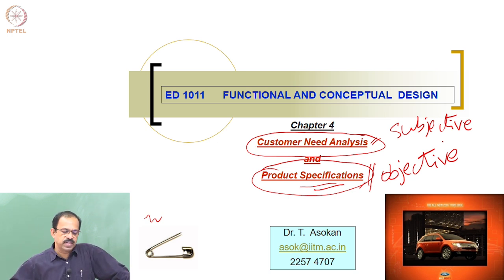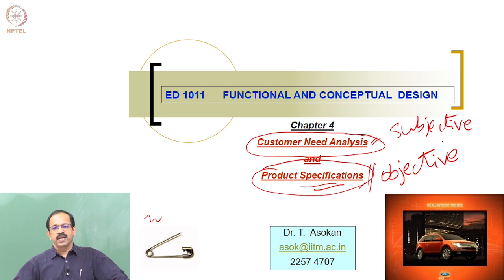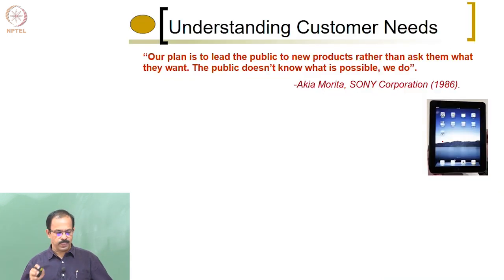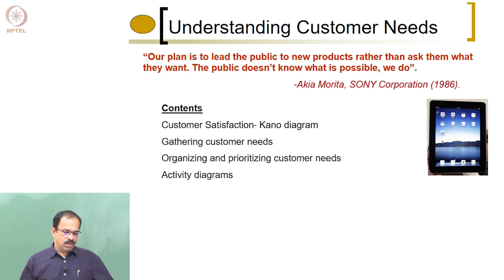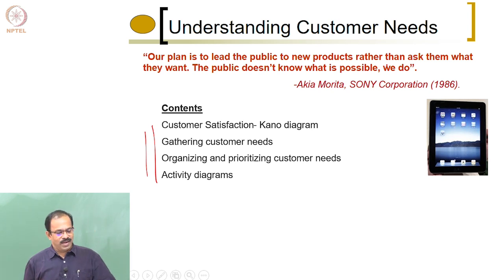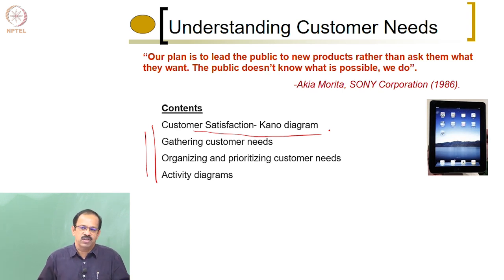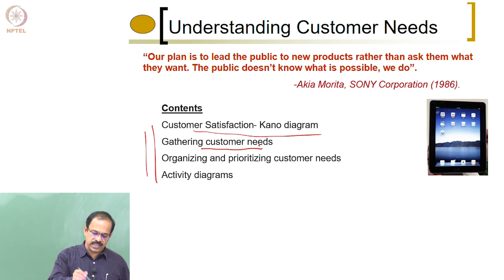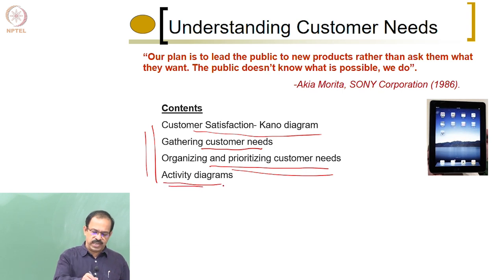In the next few classes, we will try to see how do we identify the customer needs first and then how do we convert these needs into design specifications. We will look at how to define customer satisfaction — how do we say that the customer will be satisfied with the product? And then we look at how to gather the customer needs, how to prioritize them, and what other things are needed. Later we will go for the specification.